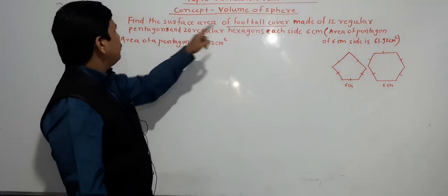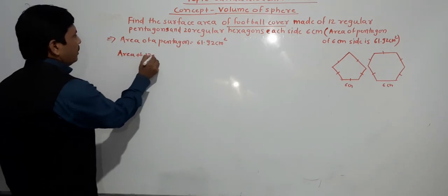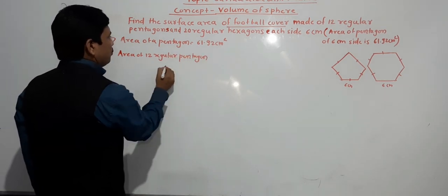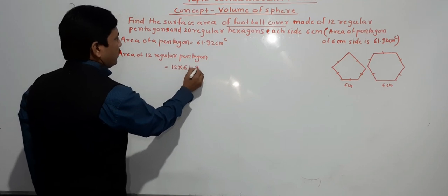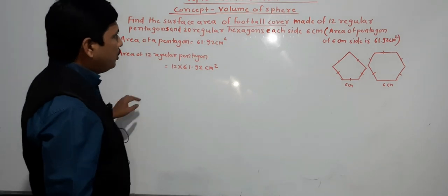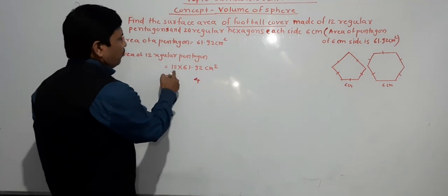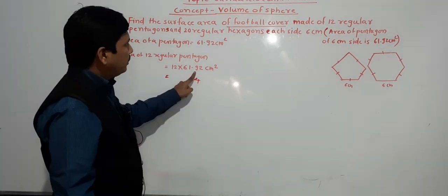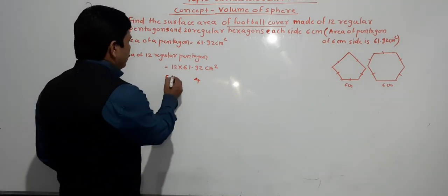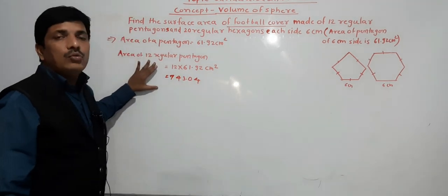There are 12 regular pentagons. So, area of 12 regular pentagons equals 12 multiplied by 61.92 cm square. Calculating: 12 twos are 24, 12 nines are 108 — this gives 743.04 cm square. This is the area of 12 regular pentagons.